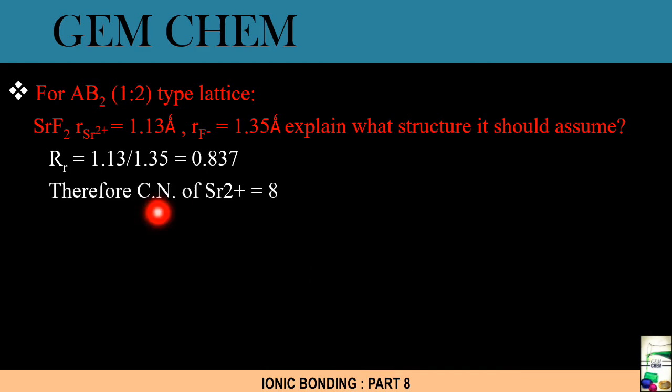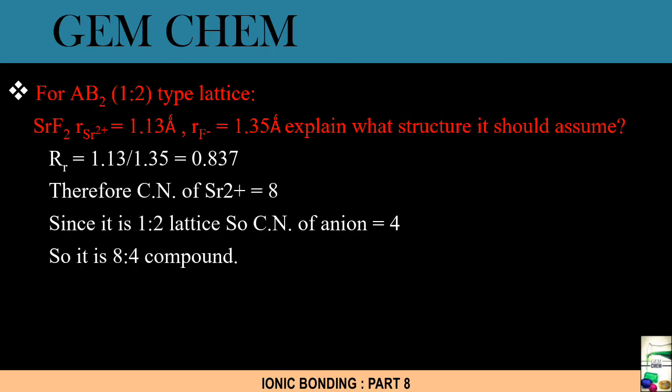We can write it as coordination number of Sr2+ is 8. We can see here it is 1:2 type, right? So the coordination number of Sr2+ is 8. So the coordination number of anion must be half of it. So it is actually 4, just like the case we have seen previously in different types of lattices. As a result, it is an 8:4 compound. So this assumes fluorite structure.